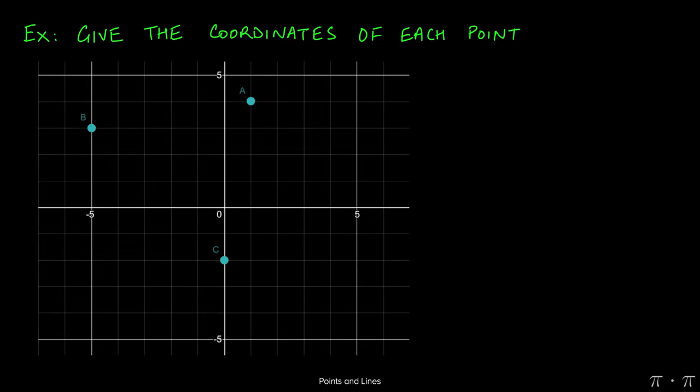Let's say we're asked to find the coordinates for these three points. We can start with A. We notice that we would need to move one unit to the right and four units up on the y-axis in order to get to A from the origin.